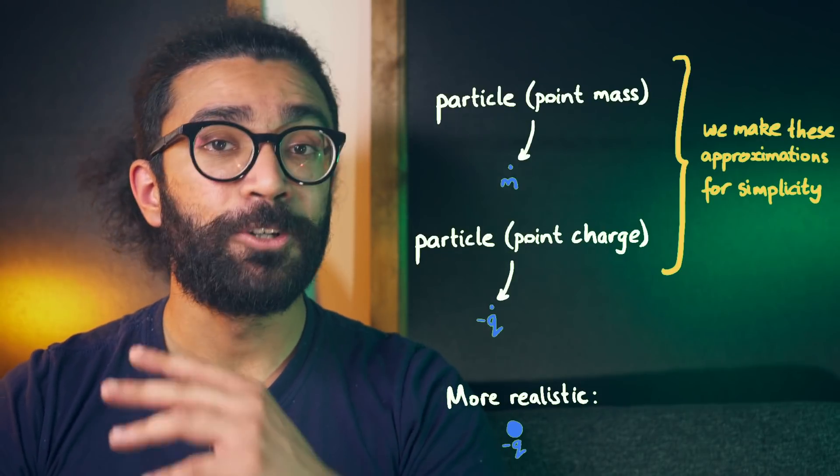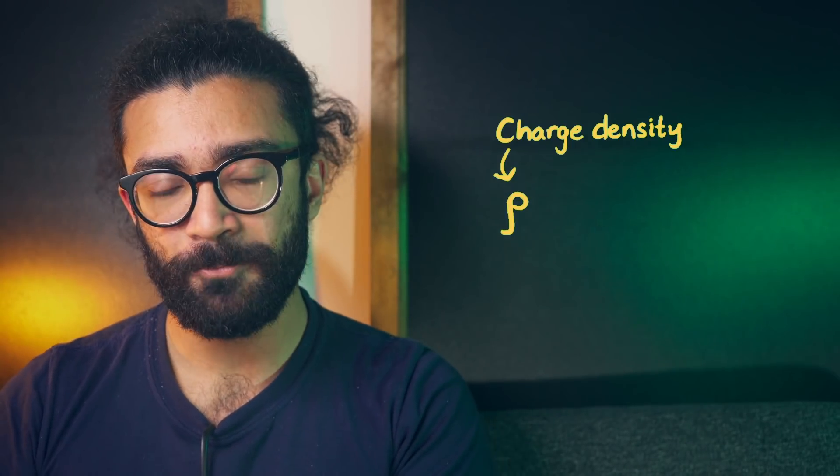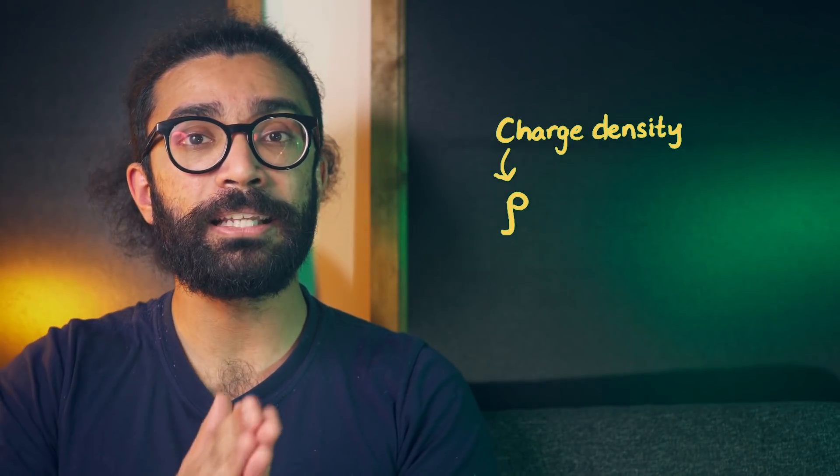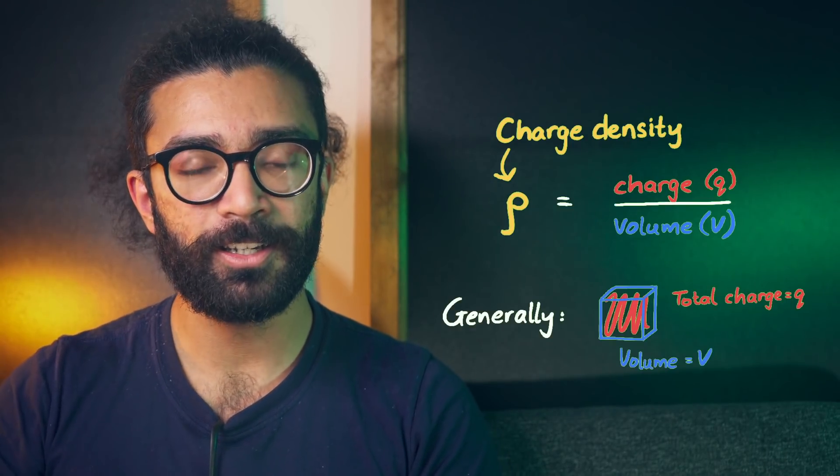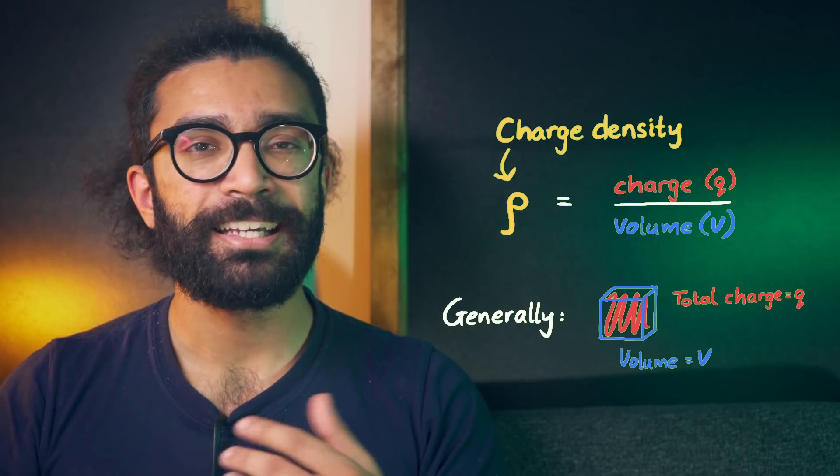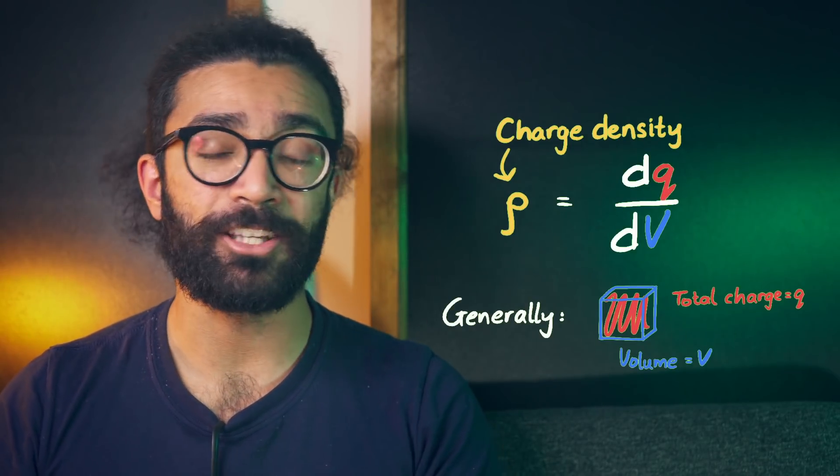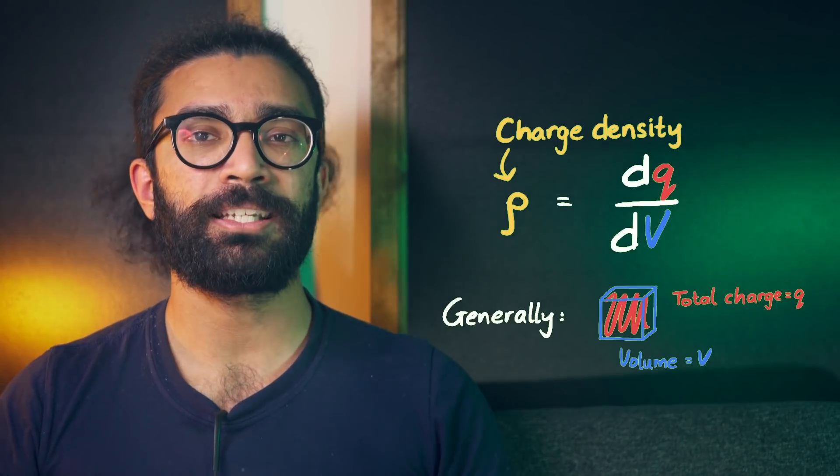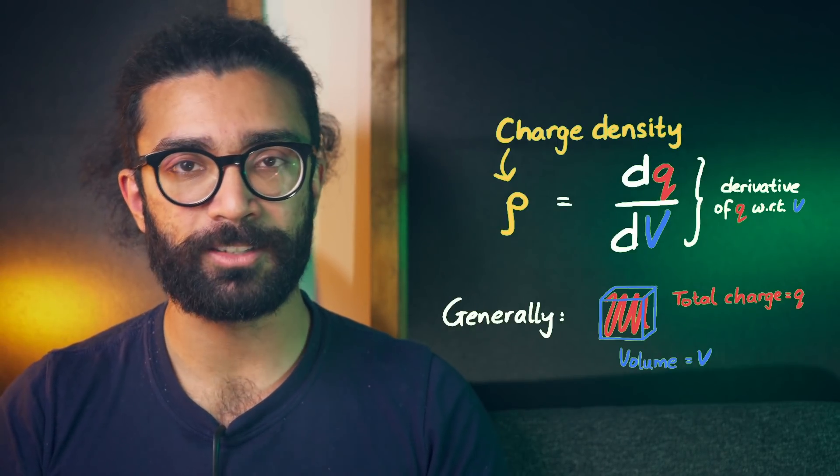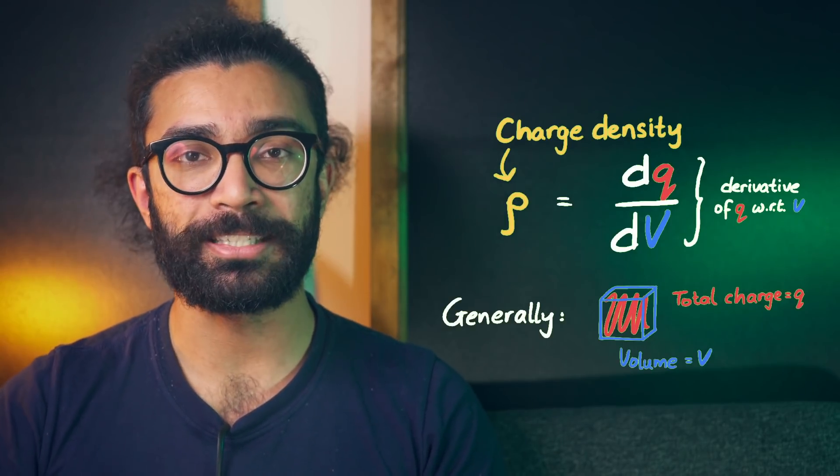So here's how we can use the Dirac delta function to mathematically encode ideas like this. We can start by thinking not about the charge of our particle, but rather the charge density of the system we're considering here. Charge density is simply the amount of charge we find per unit volume. To put it in a slightly more correct way, it's actually the rate of change of charge with respect to volume dq/dv, which mathematically means that we find the derivative of the charge with respect to volume. This is a bit more technically correct, although we won't go into too much detail here.